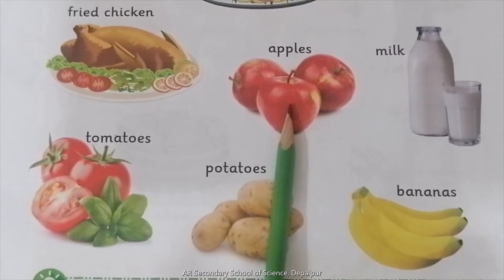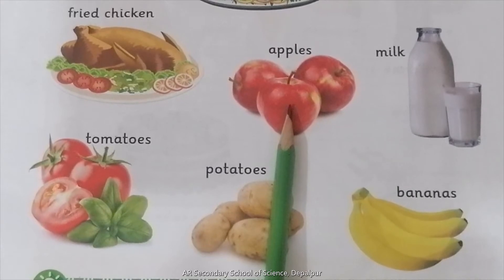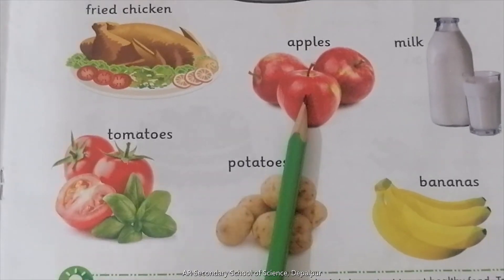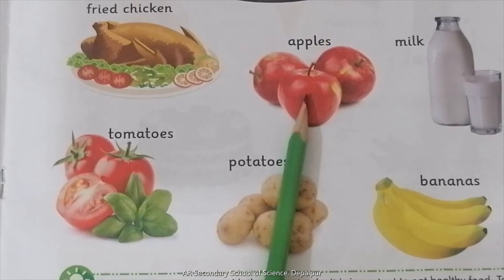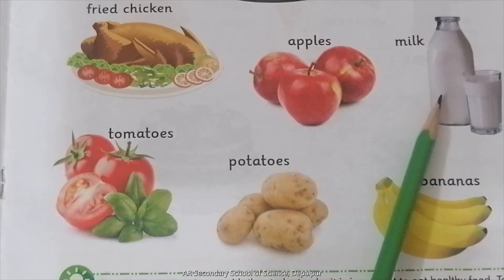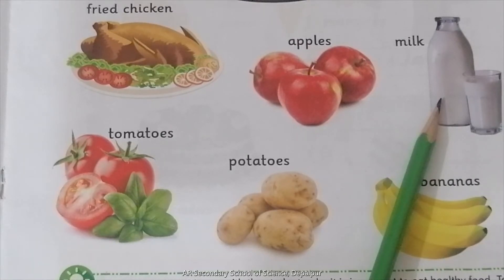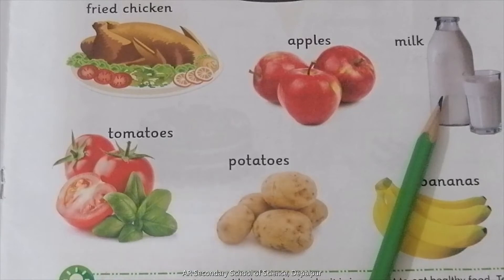यह क्या है? What are these? These are apples. Apple कौन-कौन खाता है? आप सब — वाو! Good. What is this? This is milk. आप में से milk कौन-कौन पीता है? आप सब — Well done! आपको पता है milk से क्या होता है? Milk से हड्डियाँ मज़बूत होती हैं।